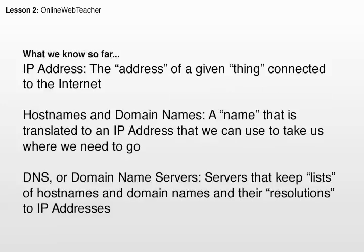We know that an IP address is the address of a given thing connected to the internet. That thing could be either your laptop, your cell phone, or whatever thing is connected to the internet has an IP address. Then we have host names and domain names, which is a name that can be used to be translated to an IP address, that we can use later to take us where we need to go. And DNS's, or domain name servers, are servers that keep lists of host names and domain names under resolutions to IP addresses.